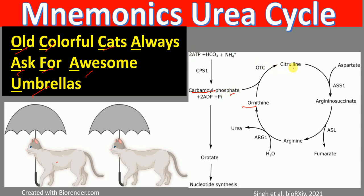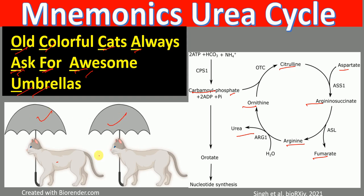'Always' A refers to aspartate, 'ask' A refers to argininosuccinate, 'for' F refers to fumarate, 'awesome' A refers to arginine, and 'umbrellas' U refers to urea. So remember: old colorful cats always ask for awesome umbrellas.